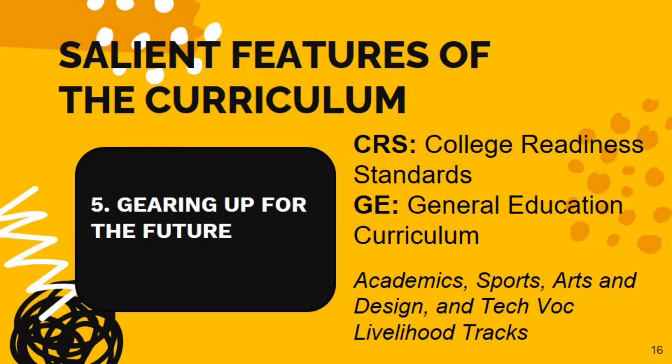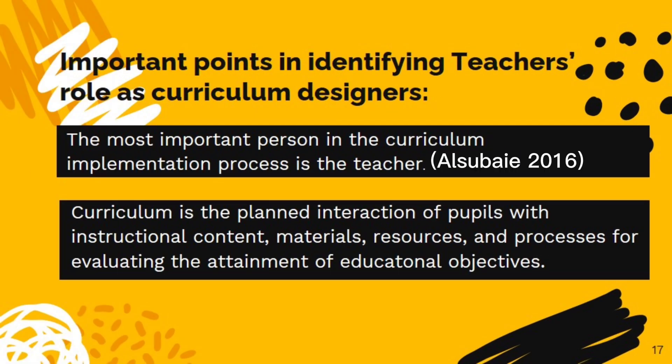Gearing up for the future: The K-12 curriculum ensures college readiness by aligning core and applied courses to the college readiness standards or CRS and the new general education or GE curriculum. Hence, the K-12 curriculum focuses on developing appropriate specialization subjects for academics, sports, arts and design, and technical vocational resources. All of these specialization subjects have to be supported by educational technology for better learning.